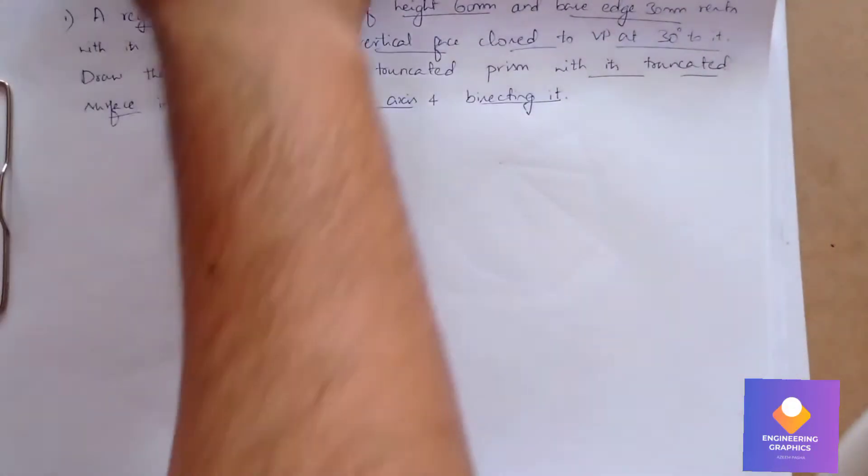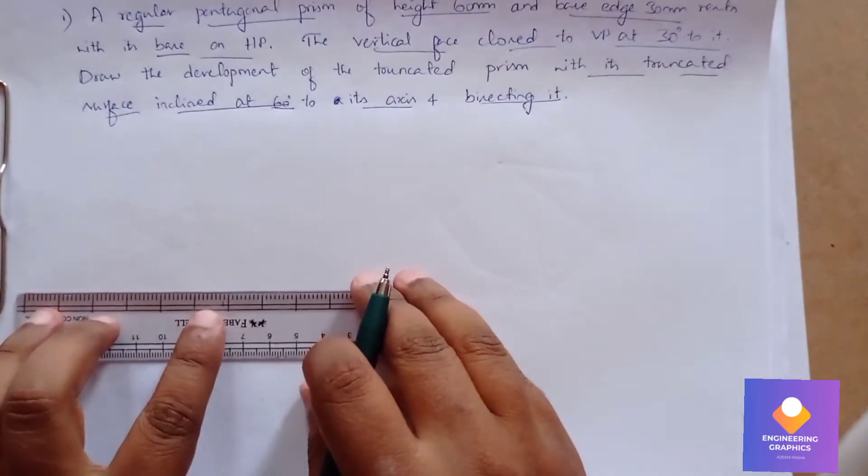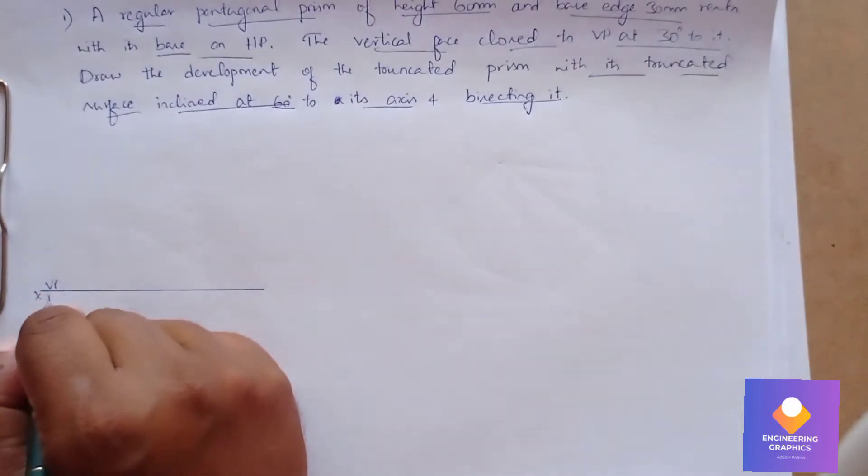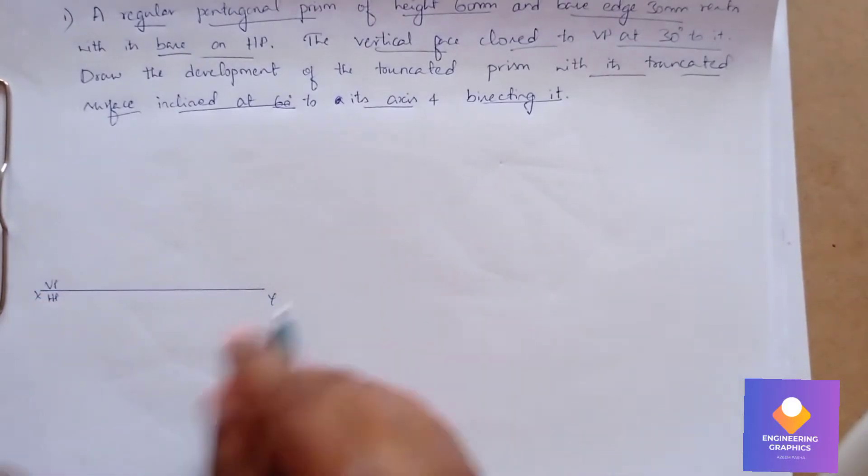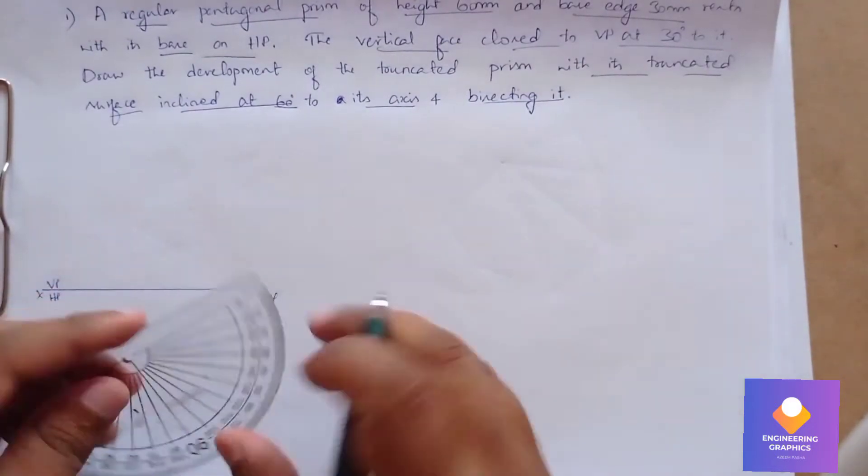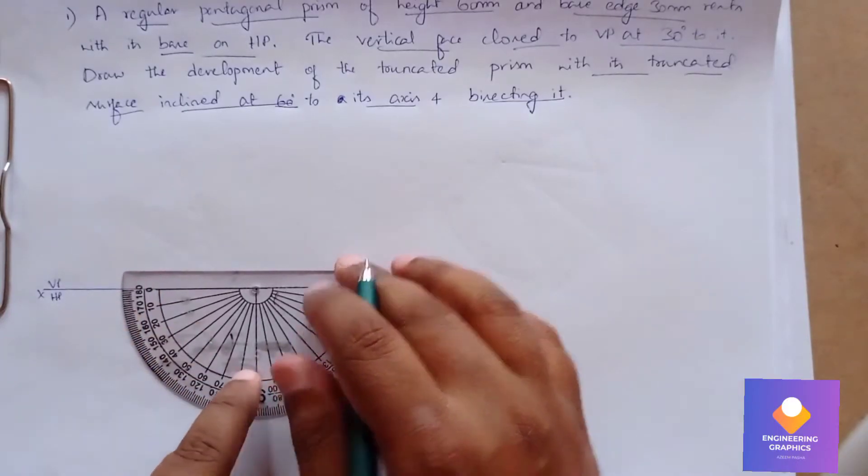Bisect means exactly the middle point we need to consider. First, I am going to draw an XY line, writing HP and VP. We need to construct a pentagon by considering a 30-degree angle line with respect to that 30-degree angle line.